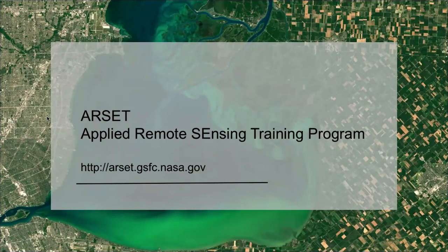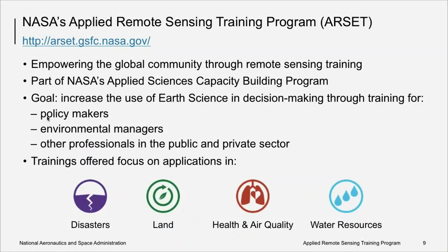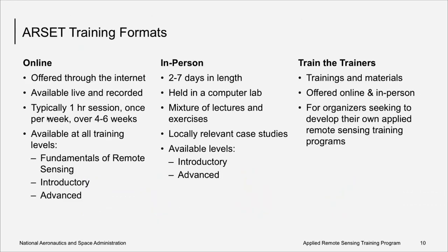Some of you are first-time participants in NASA ARSET, so we thought we'd give you a brief overview. NASA's Applied Remote Sensing Training Program, or ARSET, is a capacity-building program whose aim is to empower the global community through remote sensing training. Its goals are to increase the use of Earth system science, and specifically NASA's Earth observations, in decision-making through training for policymakers, environmental managers, and other professionals in the public and private sector. Trainings offered focus on applications in disasters, land, health and air quality, and water resources.